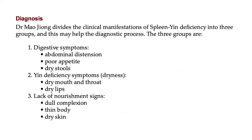Dr. Mao Chong divides the clinical manifestations of spleen EIN deficiency into three groups to help the diagnostic process. The three groups are: digestive symptoms — including abdominal distension, poor appetite, and dry stools; EIN deficiency symptoms including dryness.